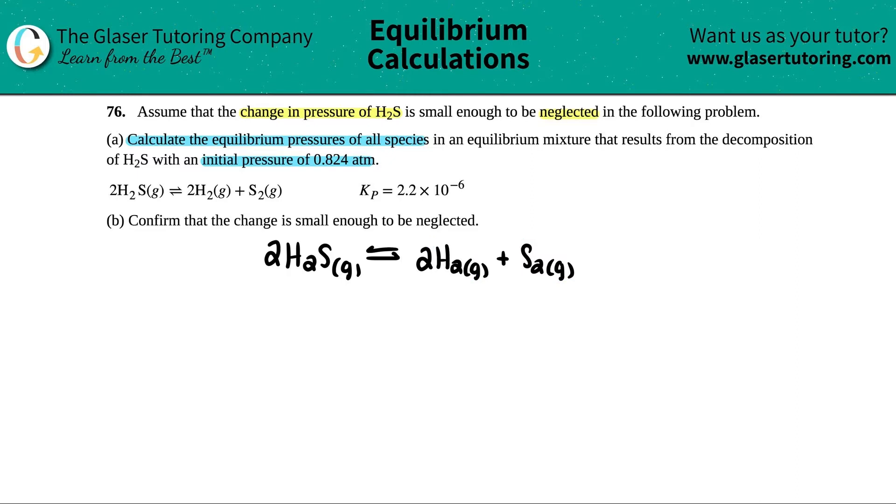Now, the only thing that they gave me was they told me that H2S had an initial pressure of 0.824 atm. And whenever they're giving you stuff that you're starting with, aka initial values, automatically go right to an ICE table. So as soon as you see the word initial or they're describing something at the start of a reaction, you're going right to the ICE table.